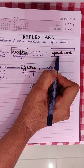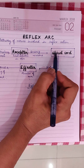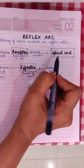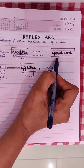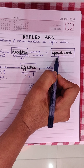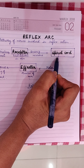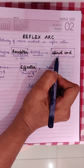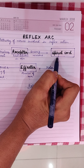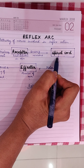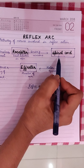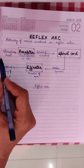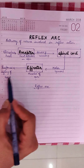Suppose you touch a hot plate — the reflex action is dropping the plate. When you drop the plate, then you will think and check your fingers: are there any blisters, has the plate broken, and so on. Thinking will be involved later. This is our typical reflex arc.